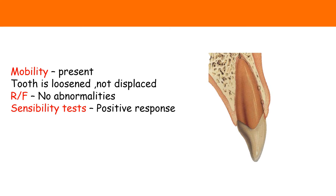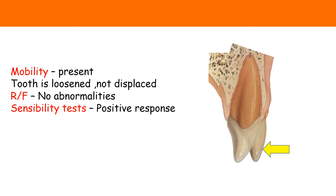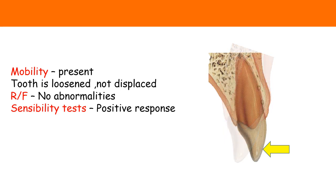As the periodontal ligament fibers are ruptured, mobility in this tooth is present. However, the tooth is loose but not displaced. Radiographically there is no abnormality seen, and when we conduct the pulp test we see a positive response because the neurovascular supply to the pulp is usually unaffected by trauma.